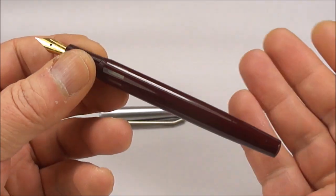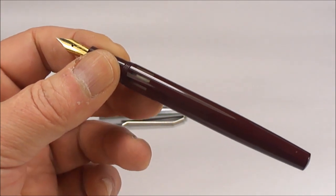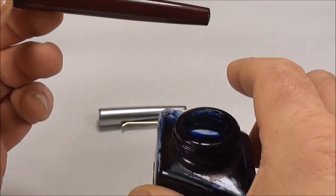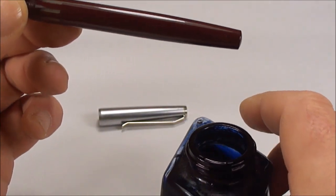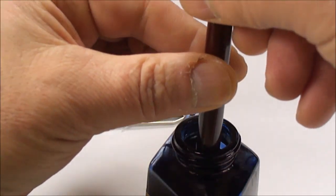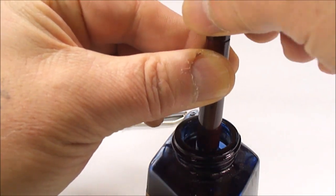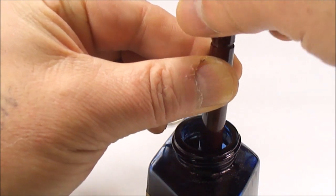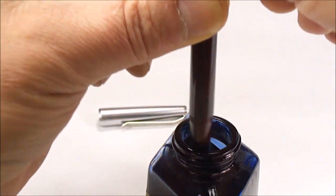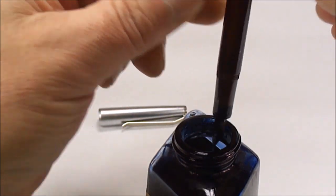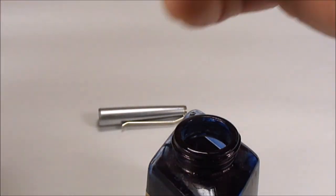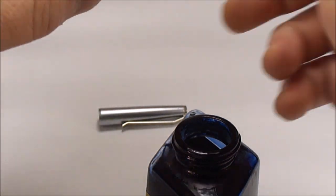So I suppose you want to see it write. So let's pop the ink there. What we do with these pens, we dip the nib into the ink, push down on the piston, and then draw it back out again. We'll only do it so far because it's only for a writing sample. Let's give the nib a clean.